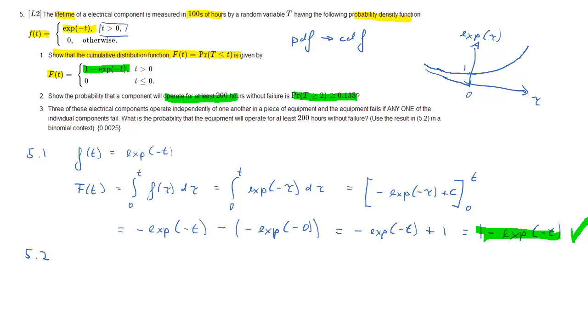Part 2: now we need to show that the probability that a particular component lasts at least 200 hours, that's a value of 2 because we measure the hours in hundreds, is about 0.135.